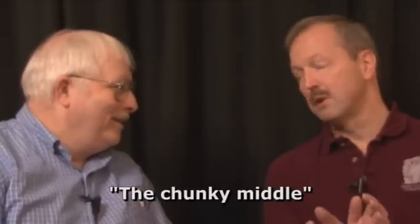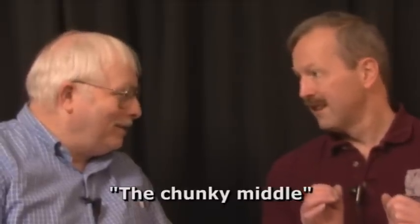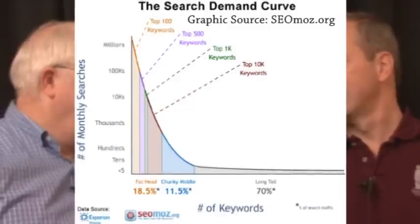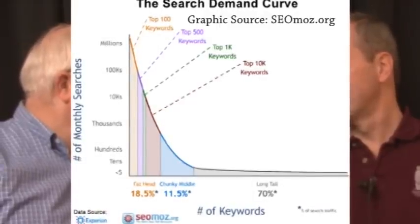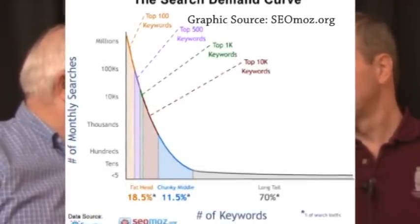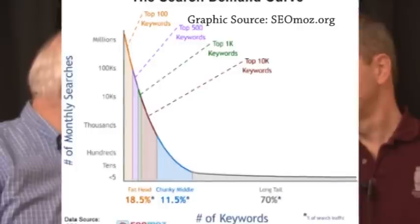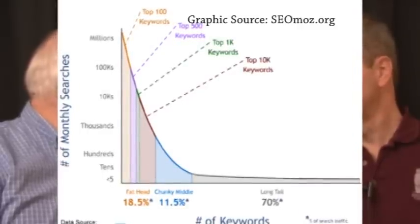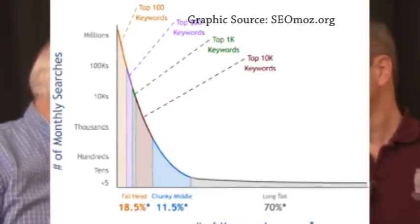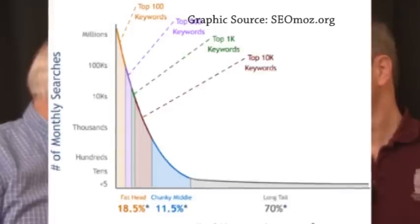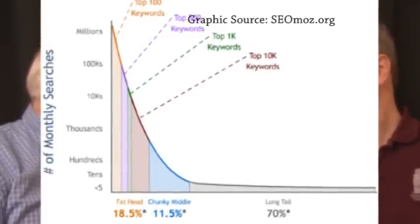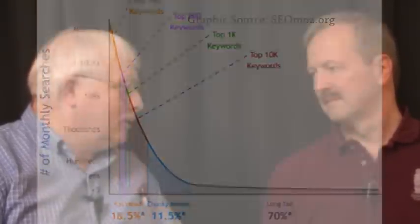And then there's also a thing we call the chunky middle. Now, this relates to a graph — I'm going to put one up on the screen here so our viewers can see it — that shows a lot of searches for a few terms, and then a number of searches for some terms, and then a long tail that goes out for a long way where there are just a few searches, but there's a big volume in those long tail terms.